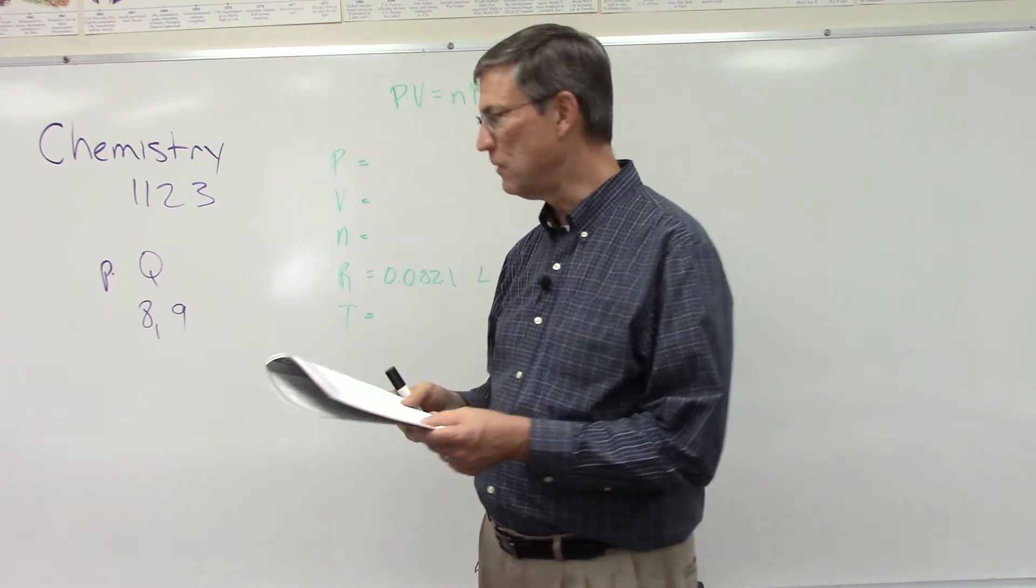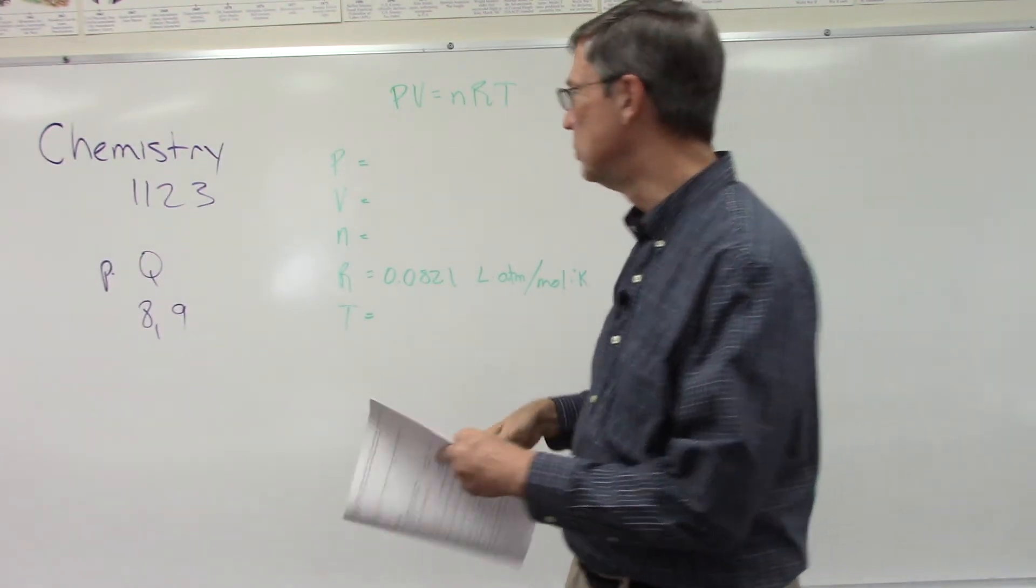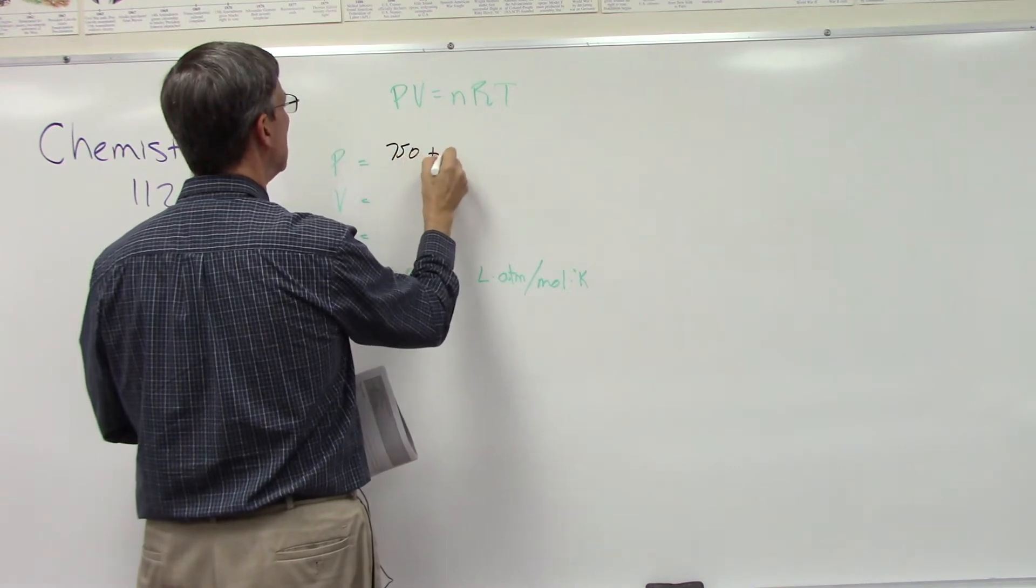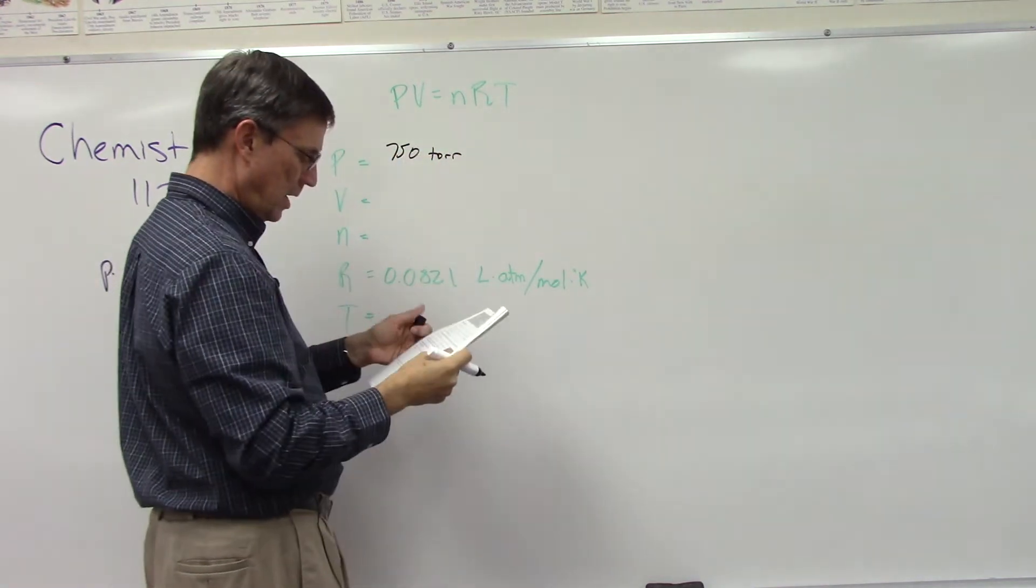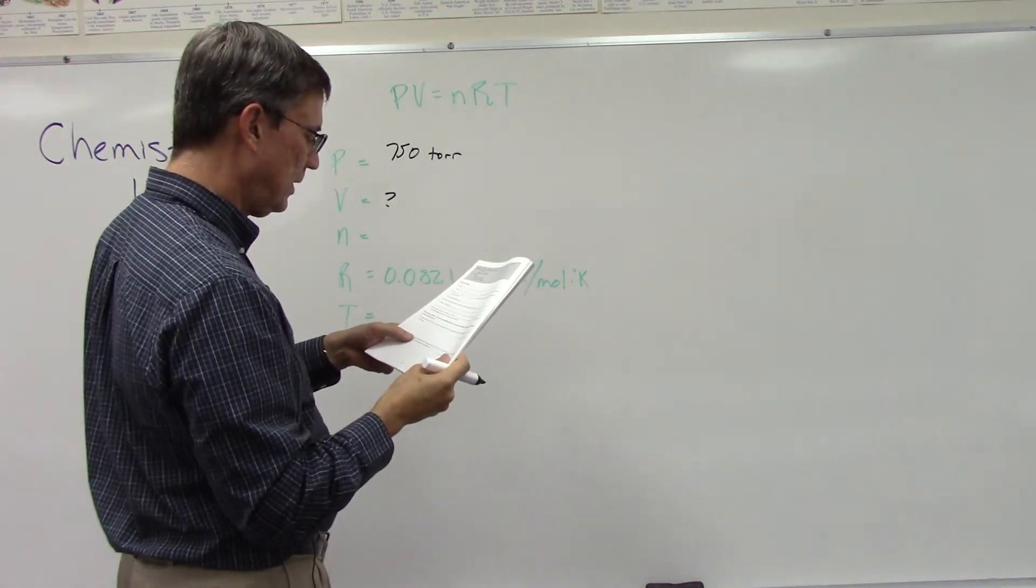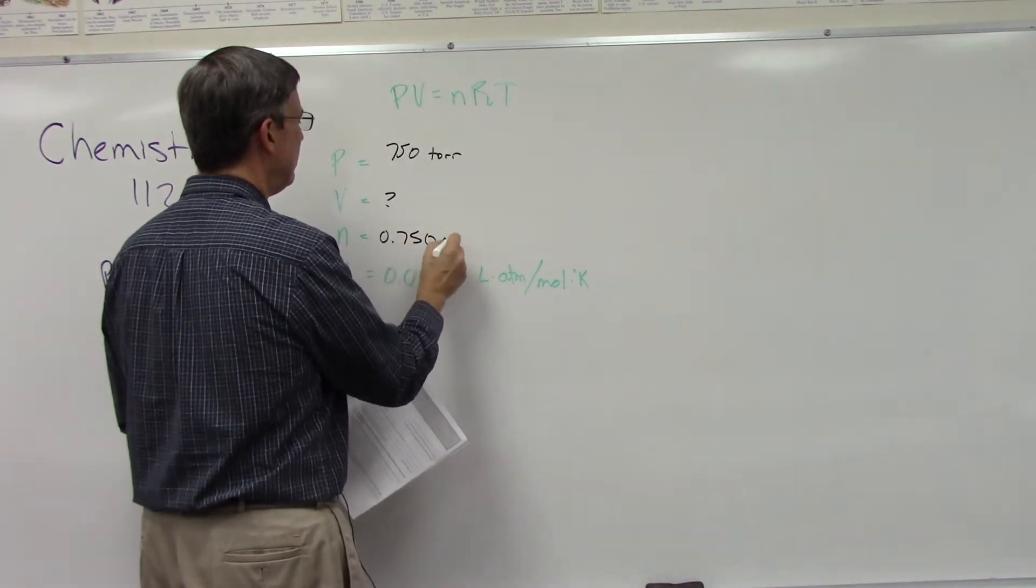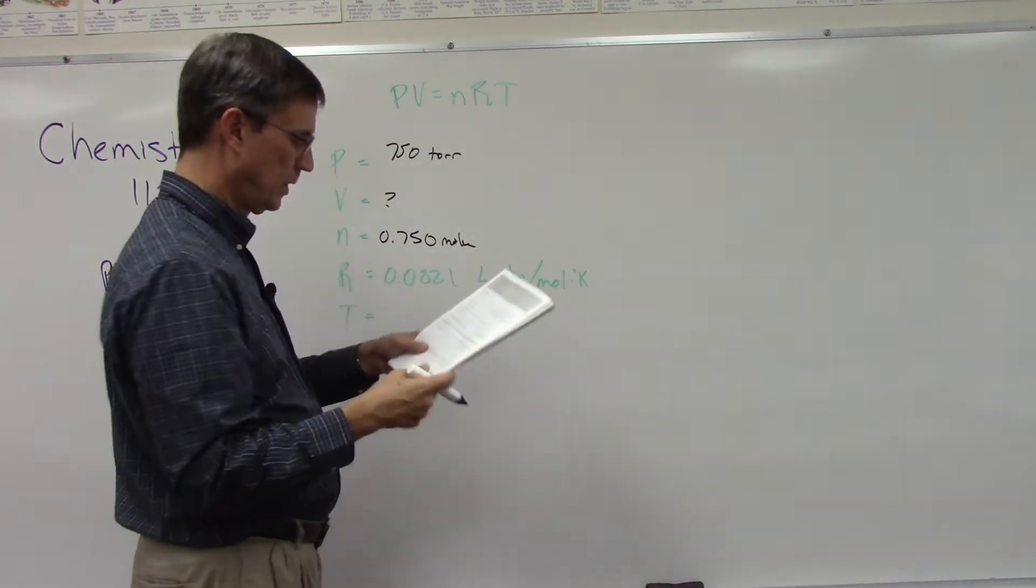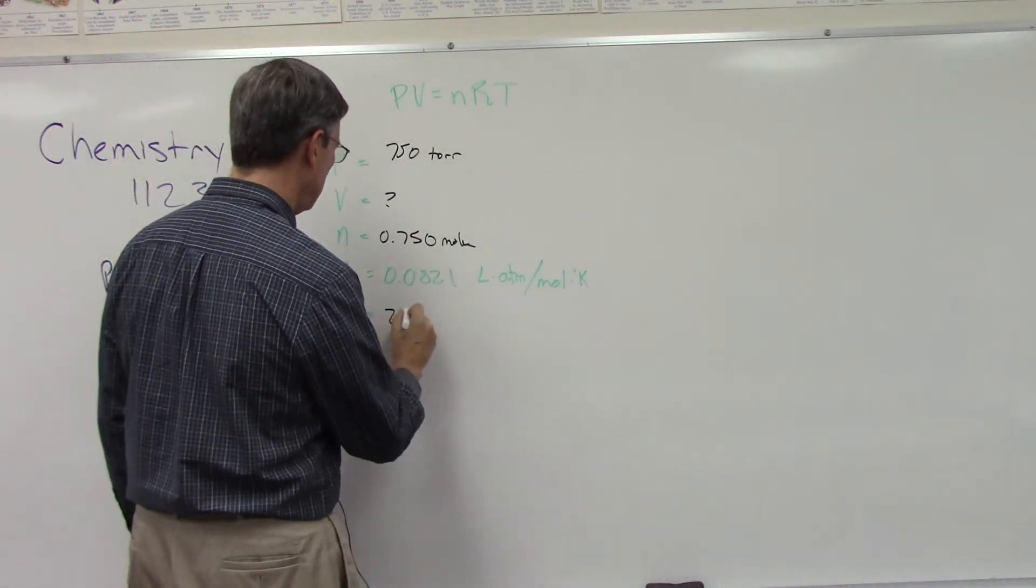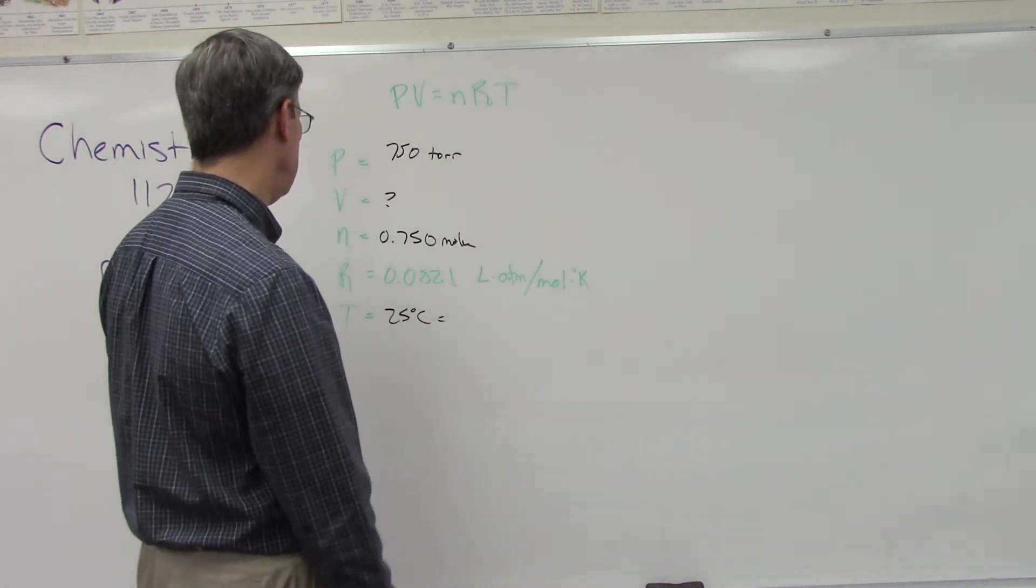It says the chemical reaction produced 0.75 moles of chlorine gas at 25 degrees Celsius and 750 torr. What is the volume of the gas produced? So if we do 750 torr, and this volume is what we don't know, and it gives us the moles: 0.75 moles. 25 degrees Celsius, so 25 and we add 273.